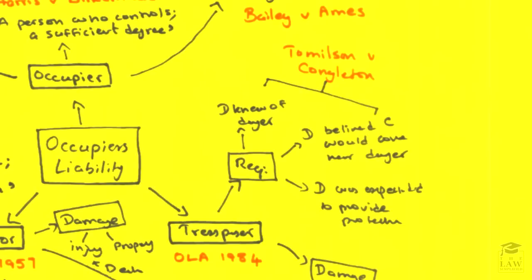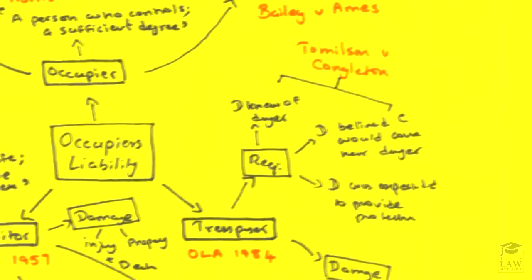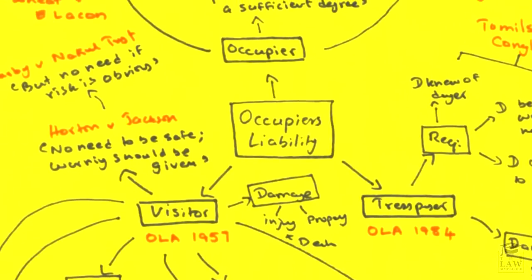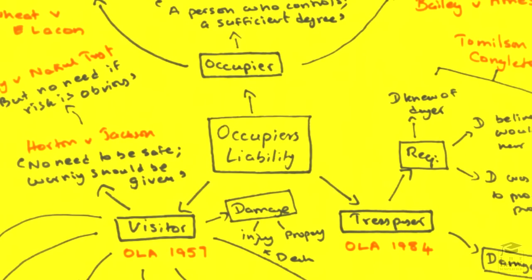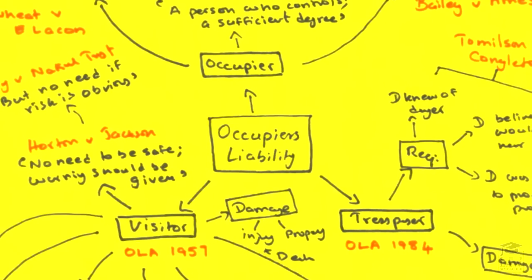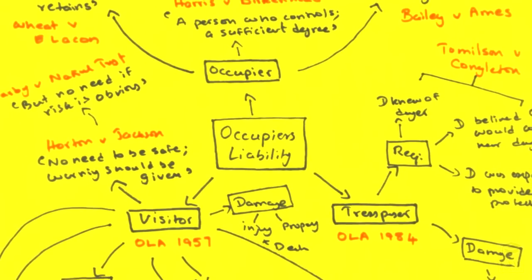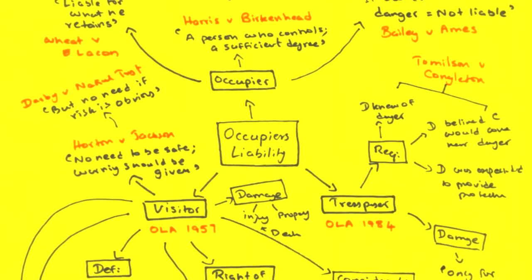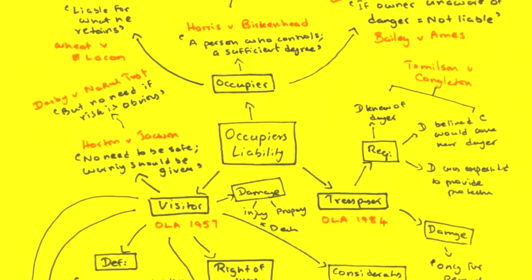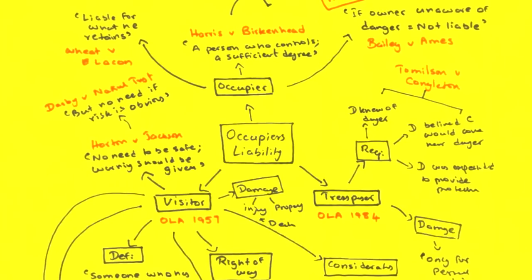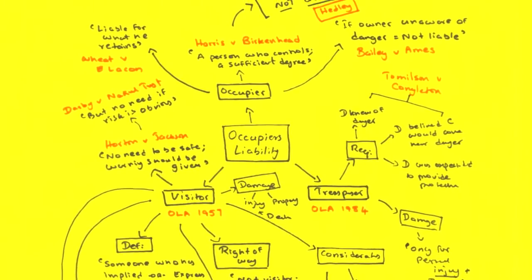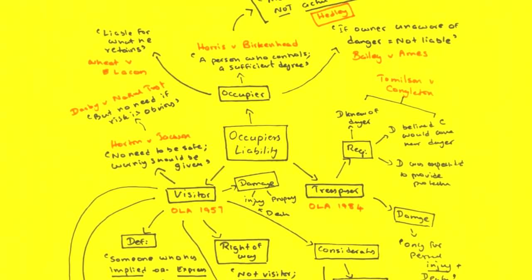Occupier's Liability as a whole is a topic which enriches a student's answer, and negligence is a topic which will most often come coupled with it. It is important to note the specific Acts — the Occupier's Liability Act of 1957 and the Occupier's Liability Act of 1984 — simply because, next to defamation, this is one of the topics which focuses mainly on statutory provisions.